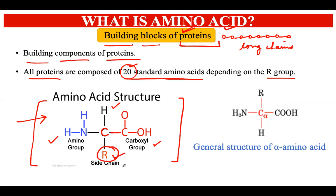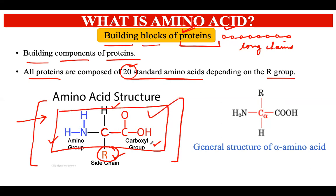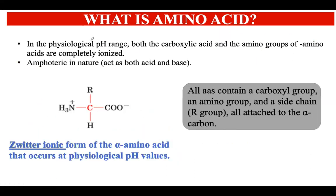There is also an R side chain. This R group is going to vary in all 20 different amino acids, and due to this variation in the R group, all 20 amino acids differ from each other. The rest of the structure is the same in all amino acids. The amino group provides the basic character to the amino acid, and the carboxylic acid group provides the acidic nature. This is the general structure of an amino acid.